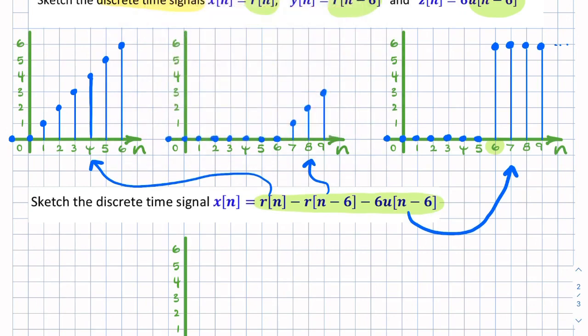So again, do it sample by sample. So let's look at n equals minus one. You have zero, minus zero, minus zero, and that'll give you zero. The next sample is zero, minus zero, minus zero, and that'll give you zero. Then you've got one, minus zero, minus zero, and that'll give you one.